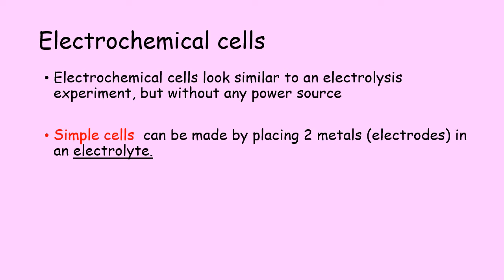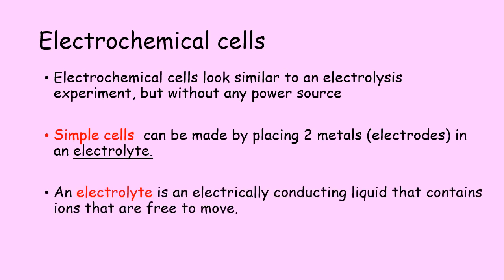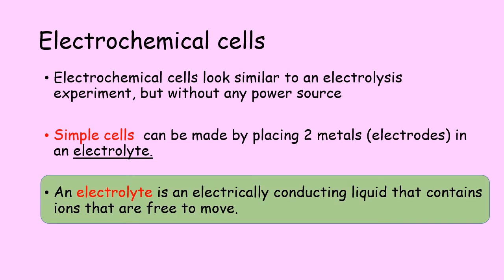A simple cell contains two metal electrodes which are connected by a wire in an electrolyte. We need to know the definition of an electrolyte: an electrolyte is an electrically conducting liquid that contains ions that are free to move. Specifically, an electrolyte is a salt that has been dissolved — an ionic compound dissolved in water. It can also be a melted or molten ionic compound.